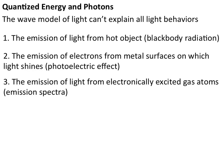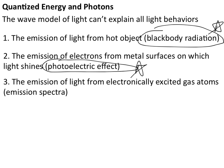At the time of its suggestion, the wave model of light was incapable of explaining all light behaviors, so additional work had to be done in this area of study. The emission of light from hot objects, otherwise known as blackbody radiation, and the emission of electrons from metal surfaces on which light has been shined, known as the photoelectric effect, are what we're going to look at in this lecture.